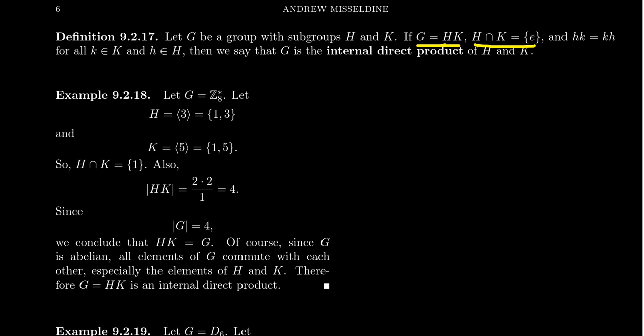Further suppose that every element of H commutes with every element of K. So if you take something in H and multiply it by something in K, that's the same as multiplying those same elements in the order K then H. I'm not claiming that H is commutative or that K is abelian — just that they commute with each other. We say that they centralize each other.